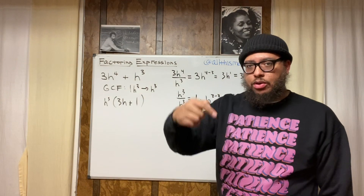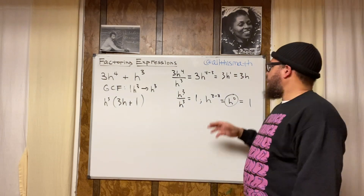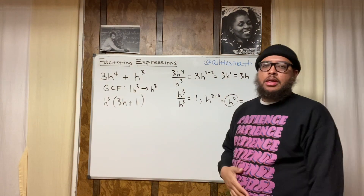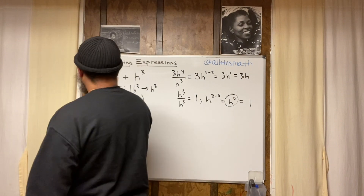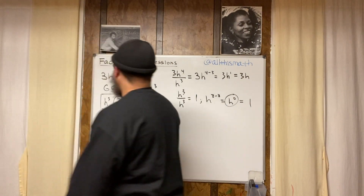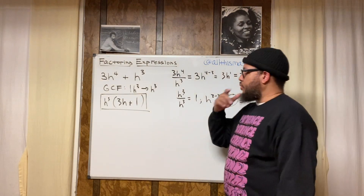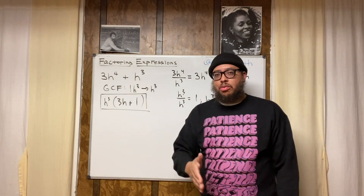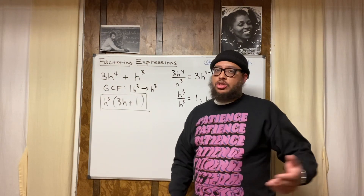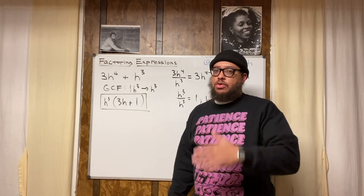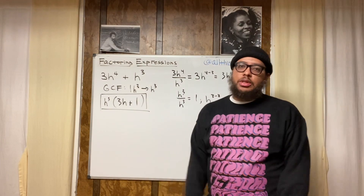I have videos in different playlists based on the different methods of factoring right here on the channel — make sure you subscribe to the channel at All This Math, and also follow us on Instagram because we put content there too. Your final answer is h to the third power times the quantity of three h plus one. Now go ask your teacher or professor for some practice problems, use this video as a guide, and go factor some expressions and pull the GCF out. Watching the video isn't enough — if you don't practice you're going to forget. Go get some practice, I'll catch you in the next video.